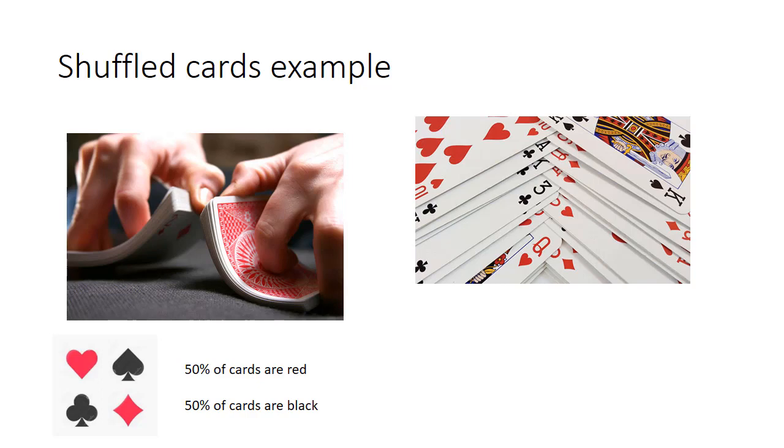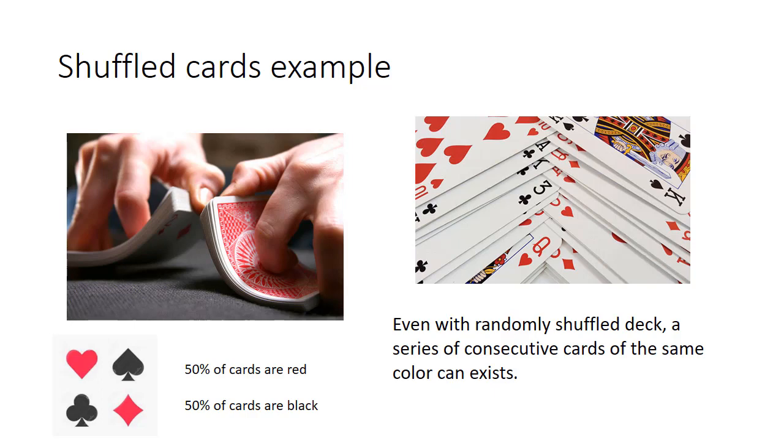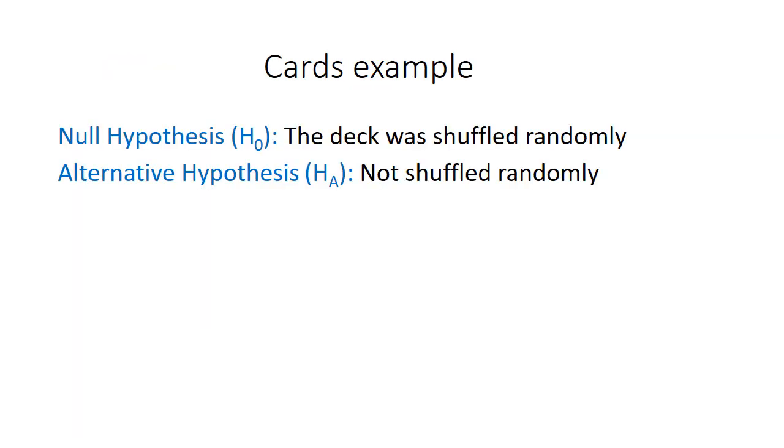But a random shuffled deck does not have to look like this. Even if it's randomly shuffled, it's possible that there's a series of cards that are the same color. That is, there could be a series of consecutive black cards or a series of consecutive red cards. Our hypothesis would look something like this: the null hypothesis would be that the deck was shuffled randomly, and the alternate hypothesis would be it was not shuffled randomly.